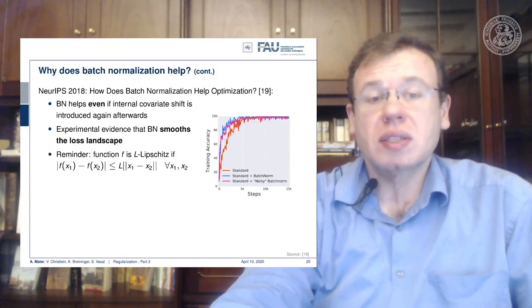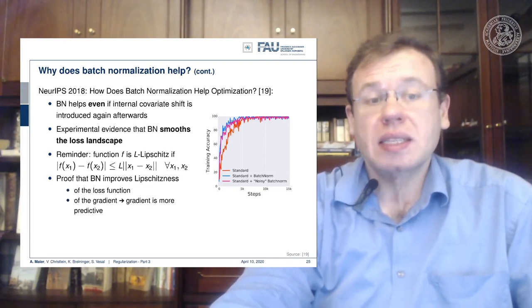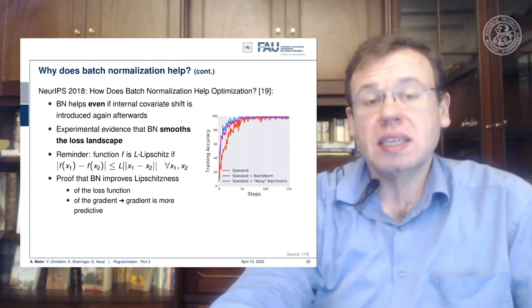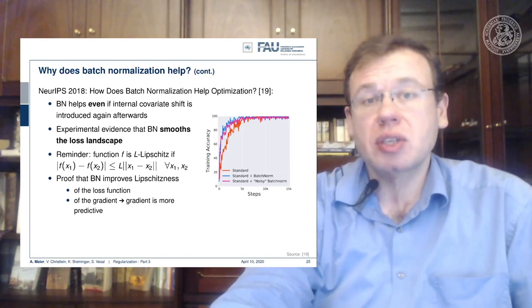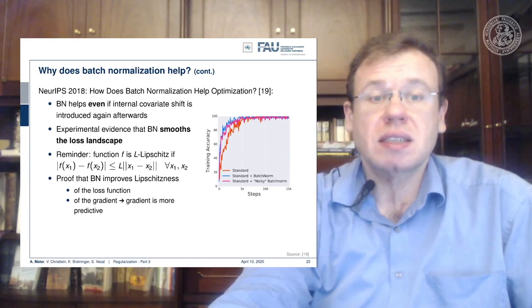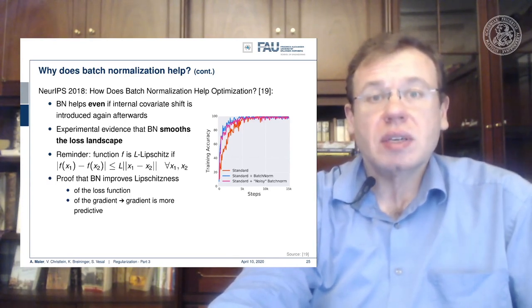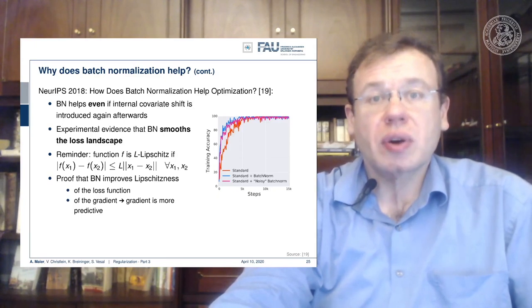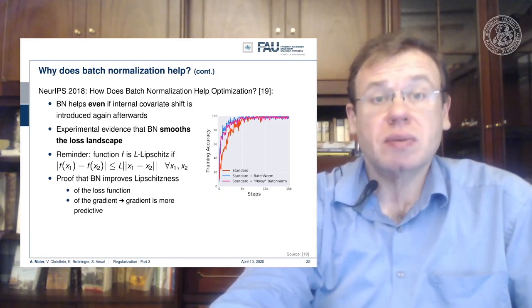And also it helped to increase the Lipschitzness of the loss function and the gradient. The Lipschitz constant is the highest slope that occurs in the function. And if you improve the Lipschitzness, it essentially means that high slopes do no longer occur. So this is in line with smoothing the loss landscape. And they even could provide a proof for this property in the paper, which is very interesting.